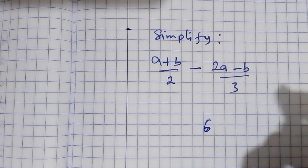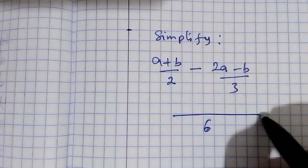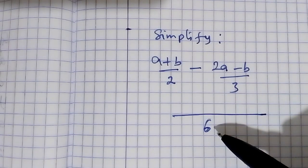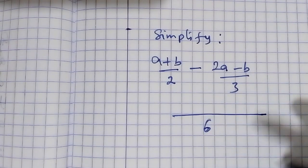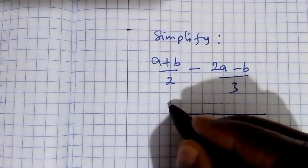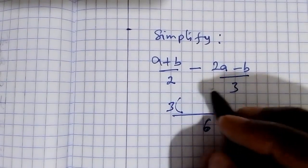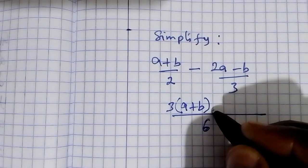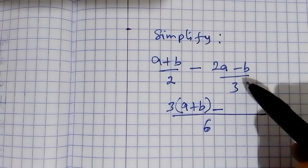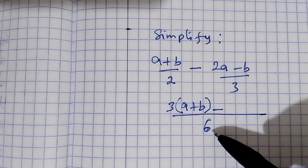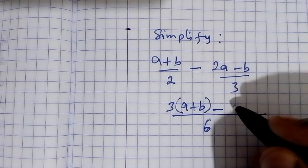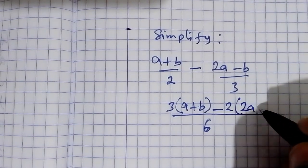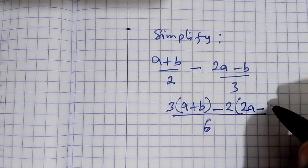6 as the denominator. 2 goes into 6 3 times, so we say 3 into a plus b minus. 3 goes into 6 how many times? 2 times. So we put here 2 into 2a minus b.